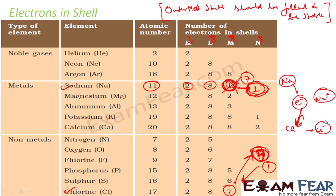Both are now in stable states. Sodium is happy after giving 1 electron — its outermost shell now has 8 electrons. Chlorine gets 8 electrons and is also happy. That is the reason why this reaction happens.